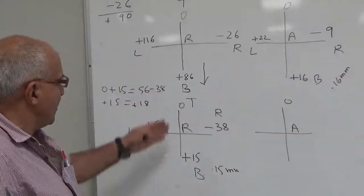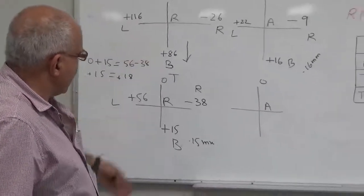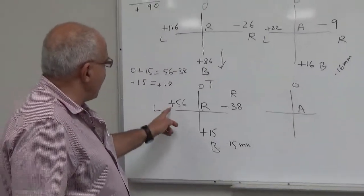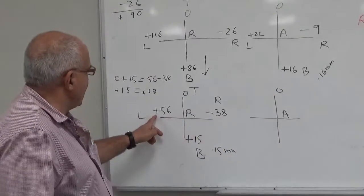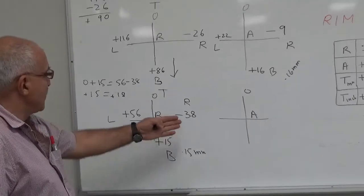It's a good result for the vertical alignment, but still we have to do horizontal alignment. You can see here, here it is plus 56 and here it is minus 38, so horizontal alignment is not good.